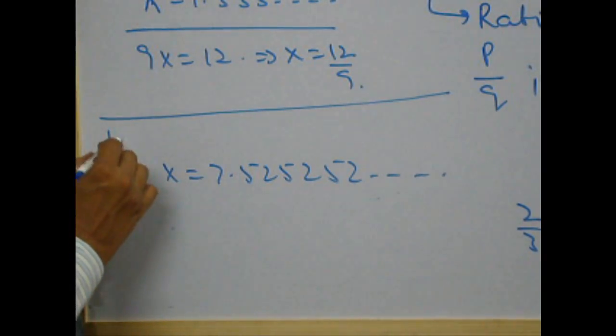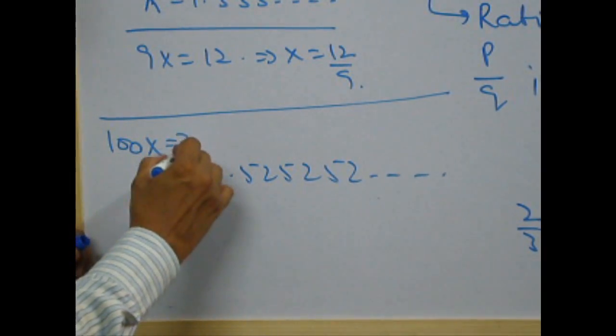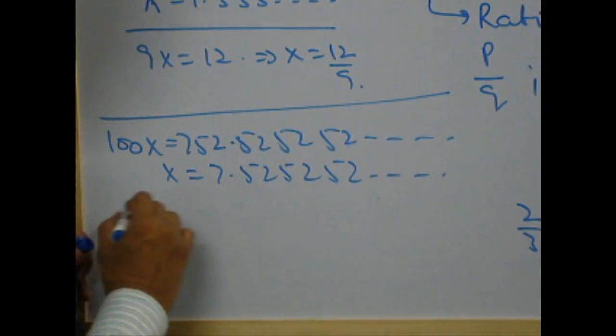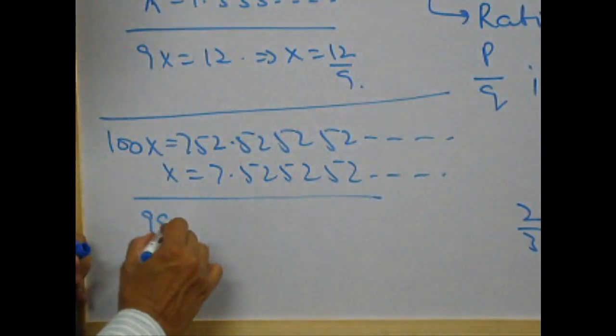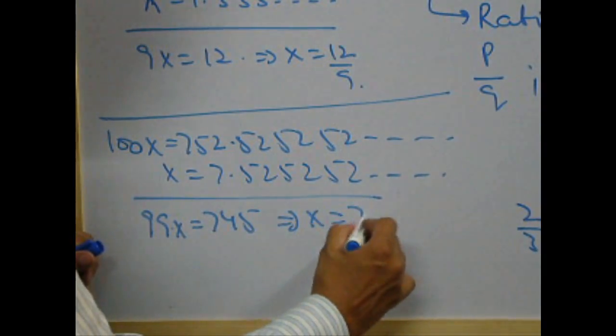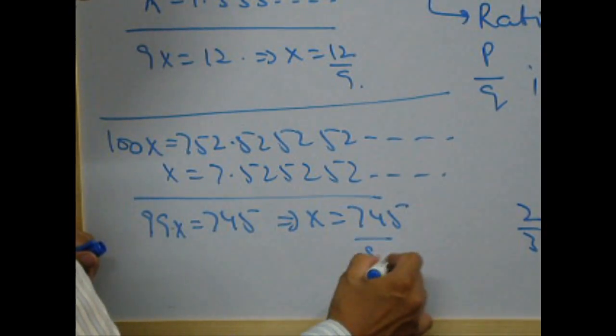100x is 752.52525252 and so on. Therefore, 99x is 745, which implies x is 745 by 99.